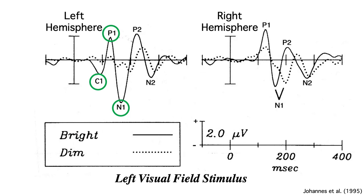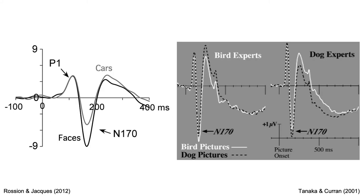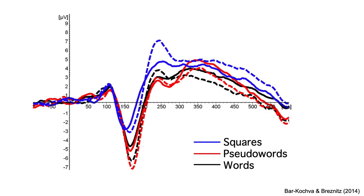As you might expect for electrophysiological signatures of sensory processing, the C1, P1, and N1 waves are highly sensitive to the physical properties of the stimulus, such as brightness. The N1 or N170 wave is bigger for faces than for most other classes of stimuli. Experience also plays a role — for example, words elicit a large N1 in experienced readers. After decades of ERP research, I bet I have a huge N1 when I look at ERP waveforms.